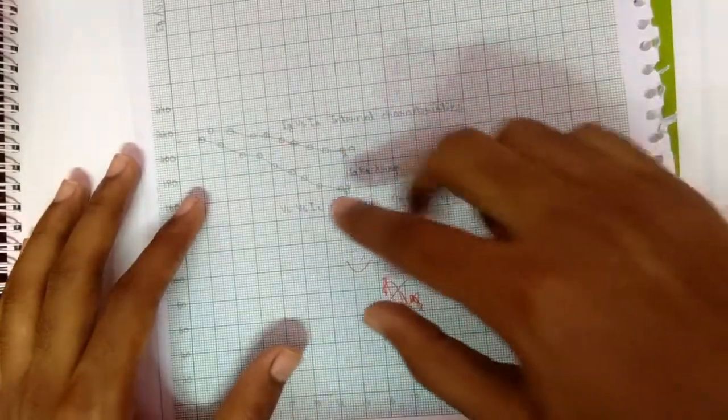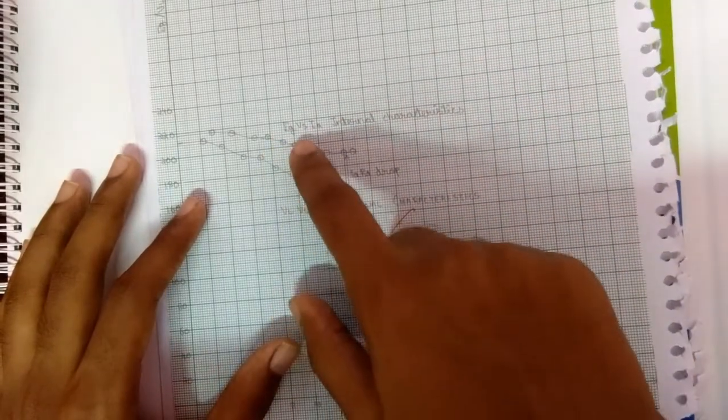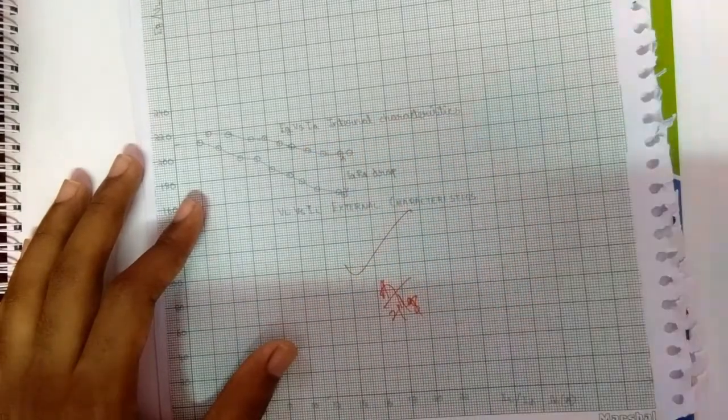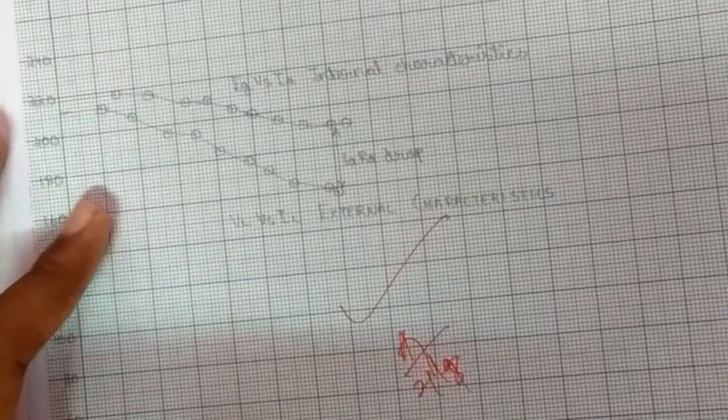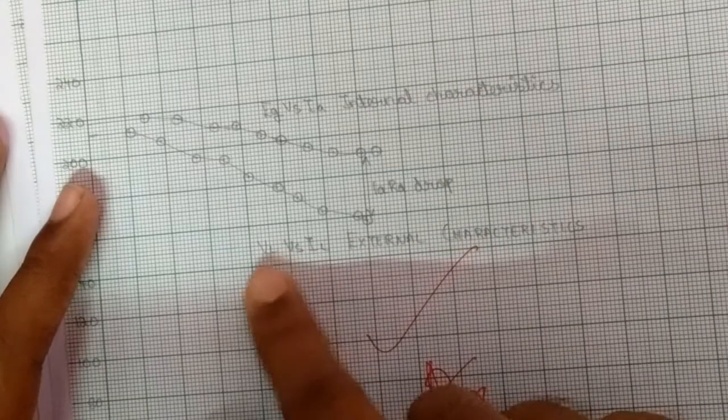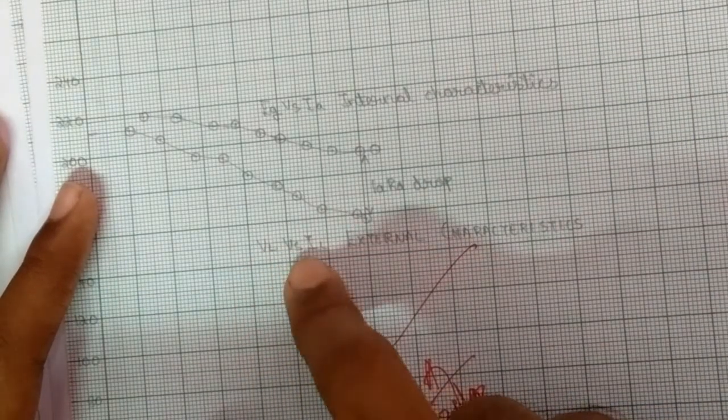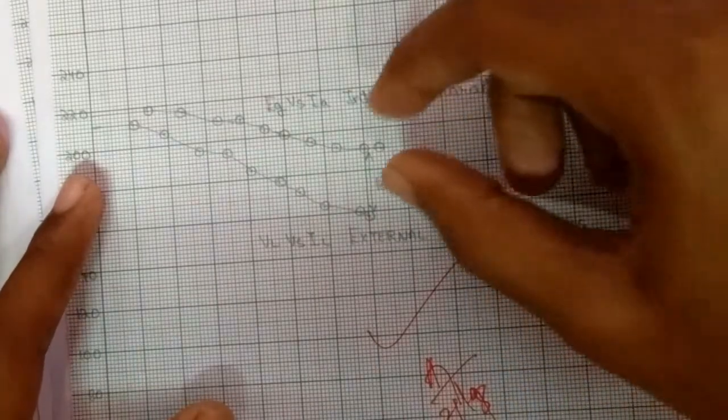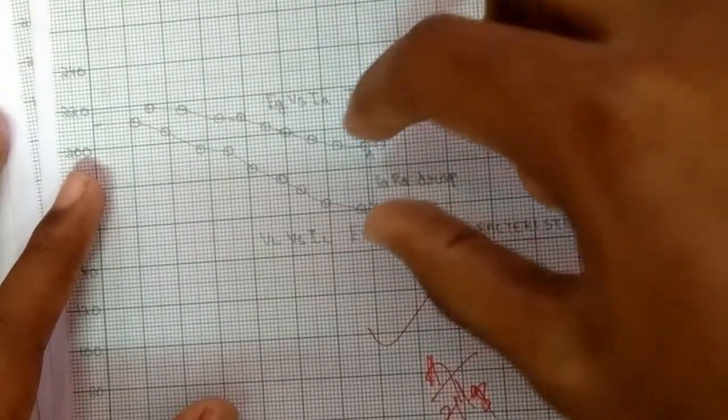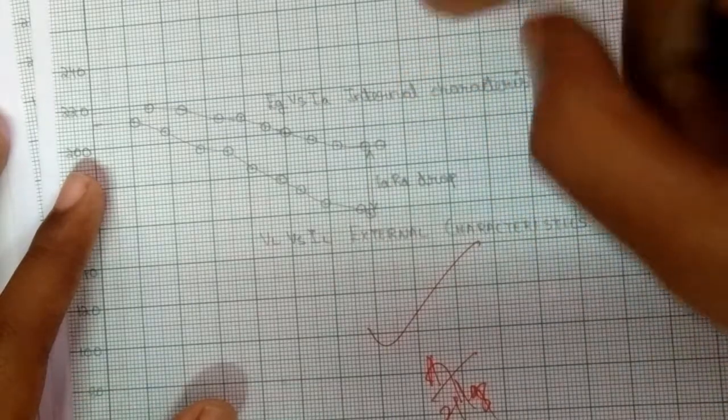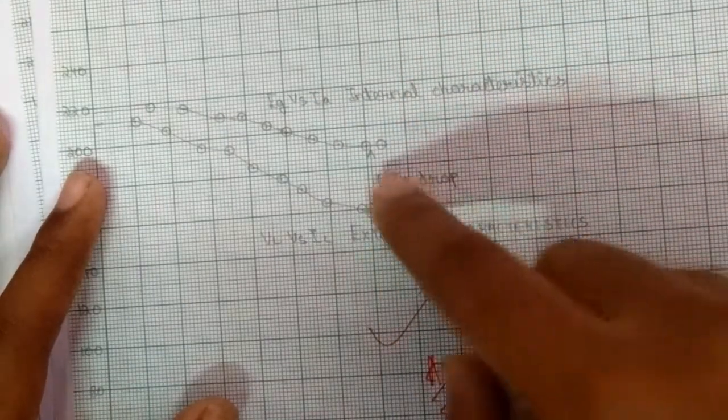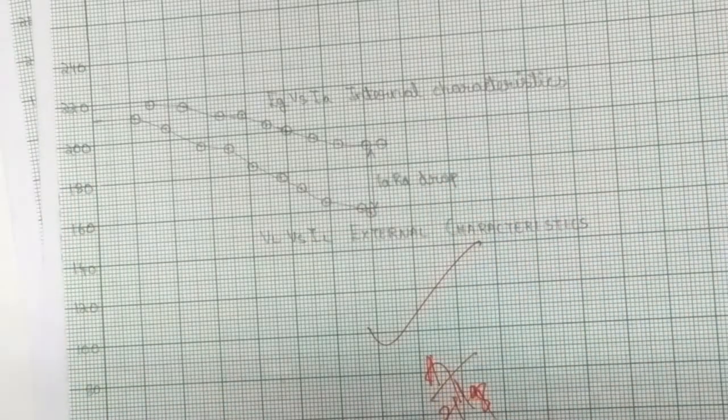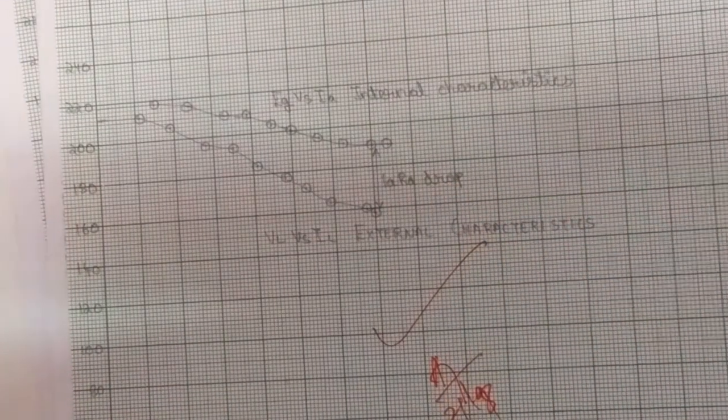We have to draw two curves: one is between EG versus IA, which is the internal characteristics, and the second will be VL versus IL, which is the external characteristics. The difference between the internal characteristics and external characteristics will be the IA*RA drop value. With these two graphs, the experiment is over.